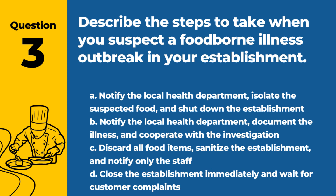Question 3. Describe the steps to take when you suspect a foodborne illness outbreak in your establishment. A. Notify the local health department, isolate the suspected food, and shut down the establishment. B. Notify the local health department, document the illness, and cooperate with the investigation. C. Discard all food items, sanitize the establishment, and notify only the staff. D. Close the establishment immediately and wait for customer complaints.